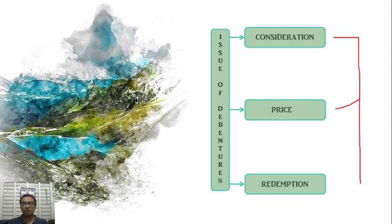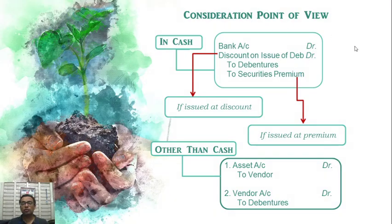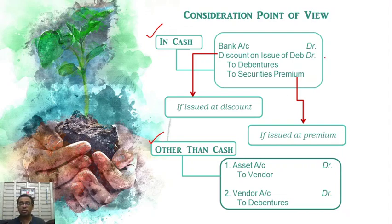The accounting treatment involves journal entries. For consideration in cash at par: Bank account Dr., to Debentures. For issue at discount: Bank account Dr., Discount on issue of debenture account Dr., to Debentures. For issue at premium: Bank account Dr., to Debentures, to Securities Premium account.